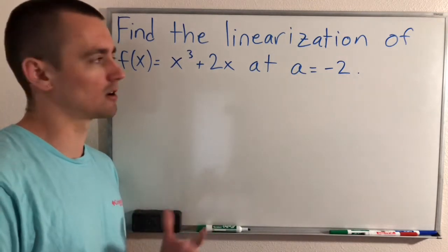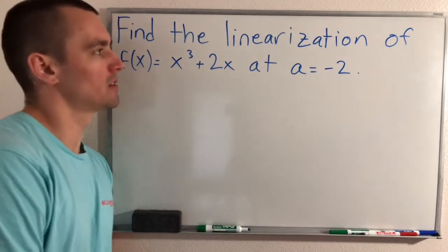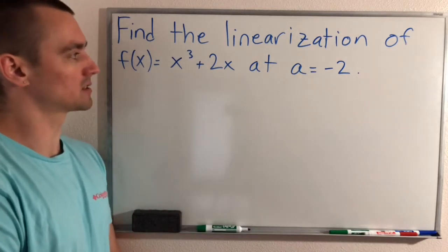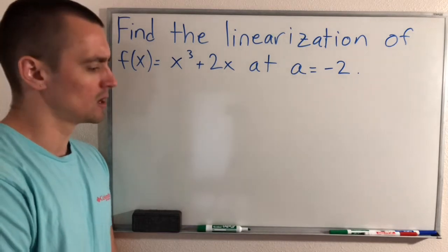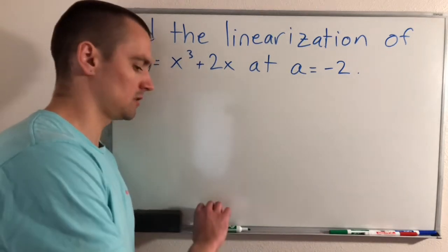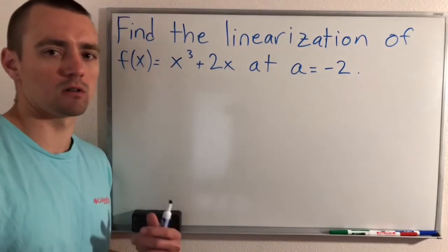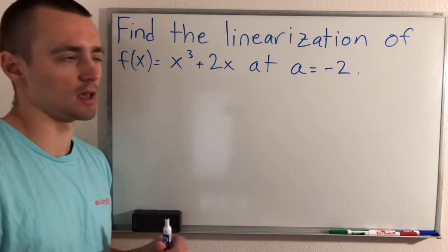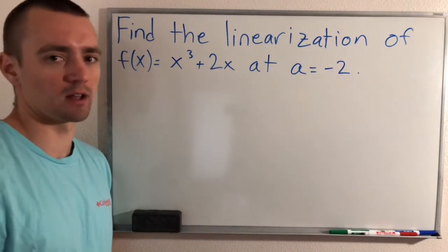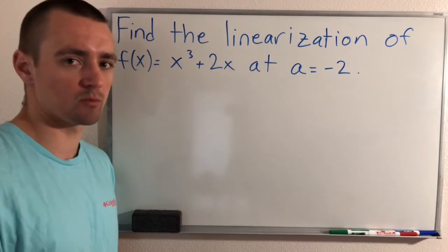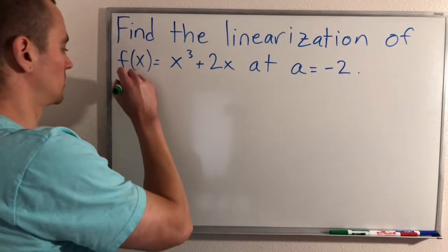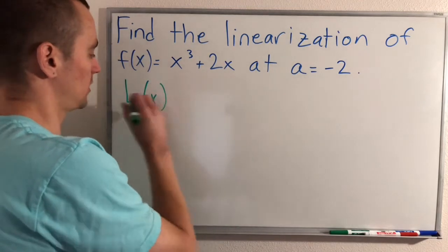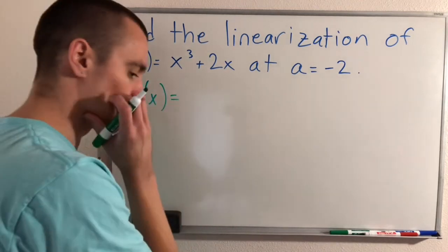Here's what we're going to start off with today. Find the linearization of f(x) equals x cubed plus 2x at a equals negative 2. So when you're doing a problem like this, you want to think about what linearization is. And basically it's the same as finding an equation of a tangent line at a given point. Basically to find the linearization of a function, we're just going to say the linearization of a function is just defined like this: